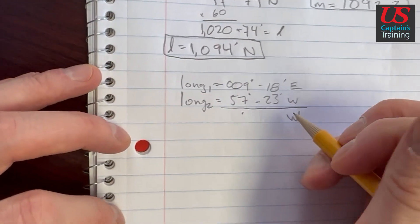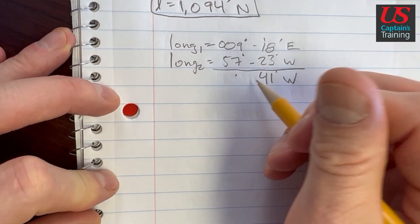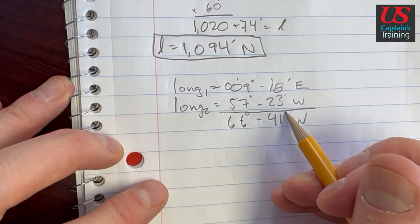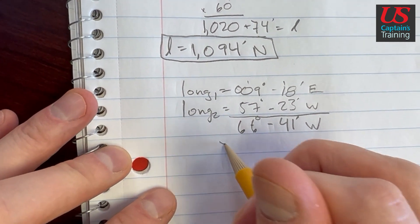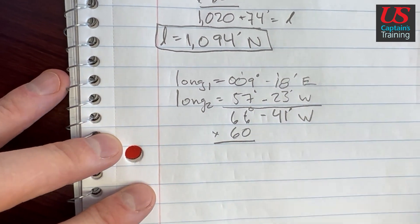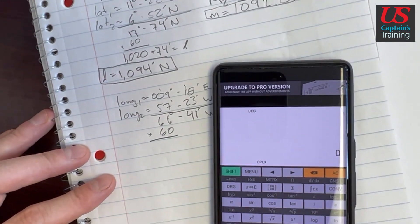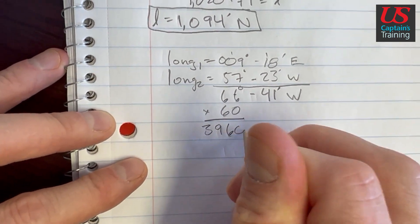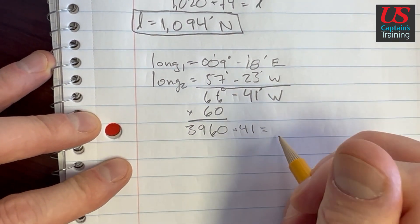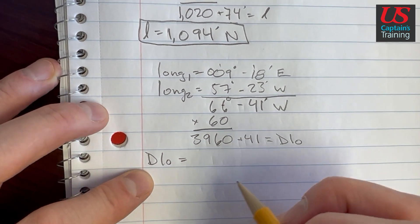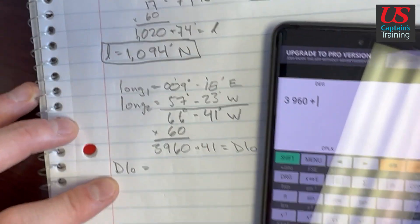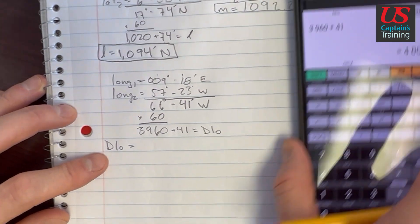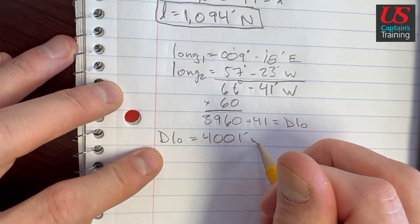So west, add these together. 8, 9, 10, 11, 41 minutes. And 9 and 7 is 16, 66 degrees 41 minutes west. We need to convert these 66 degrees into minutes times by 60 because there's 60 minutes in one degree. So 66 times 60 equals 3,960. 3,960 plus 41, that's going to equal our D low. So D low equals, let's throw this in the calculator. So 3,960 plus 41 equals 4,001. 4,001 minutes west. That's our D low.